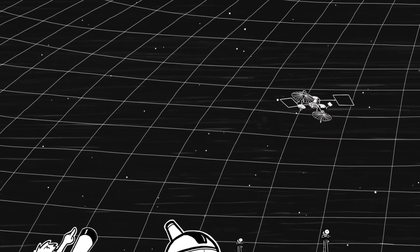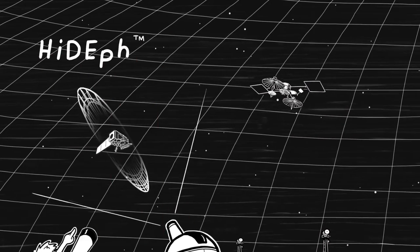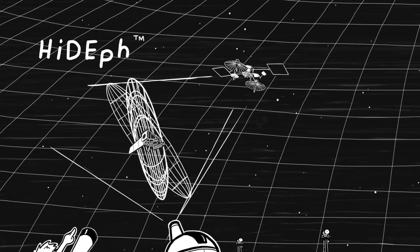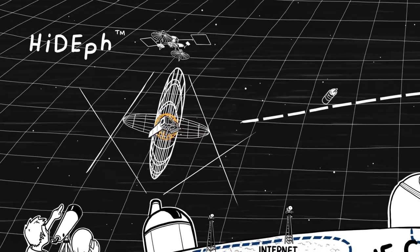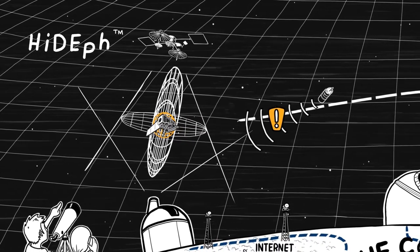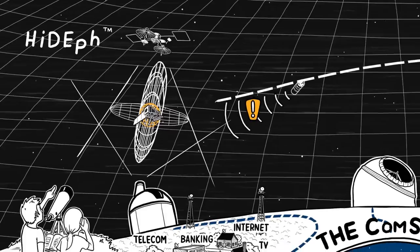At the COMSPOC, we've developed the high-definition ephemeris format, which has unparalleled accuracy and a high degree of certainty. Our ephemeris enables the best collision avoidance prediction and enables near-real-time maneuver detections.